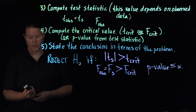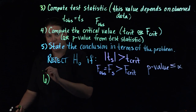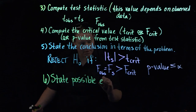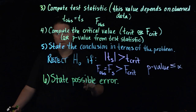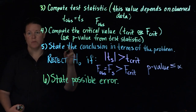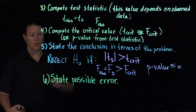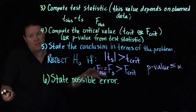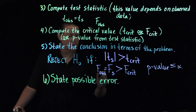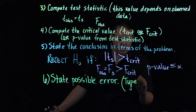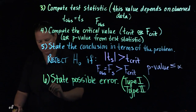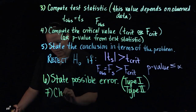Next, state the possible errors. There are two types. If you are rejecting the null, there's Type I error — where it's possible you rejected the null when it was actually true. Or if you fail to reject the null when it was possibly false, that's Type II error. Type I error is the more egregious of the two.